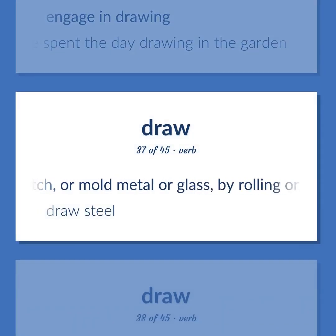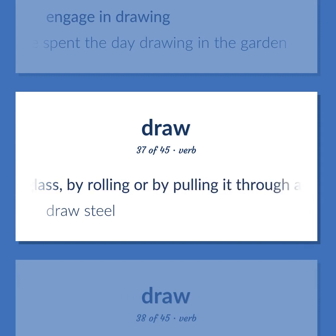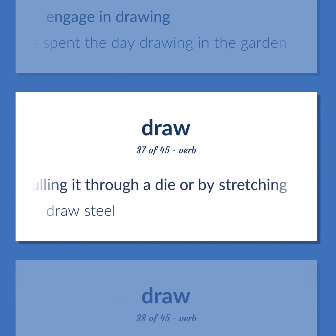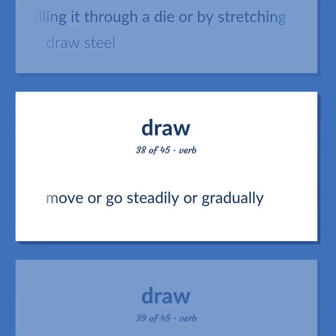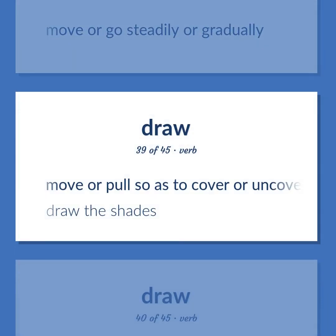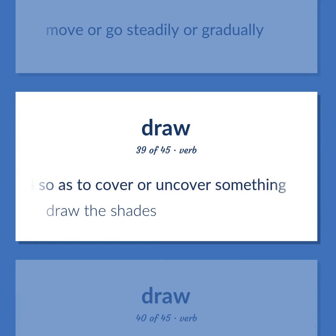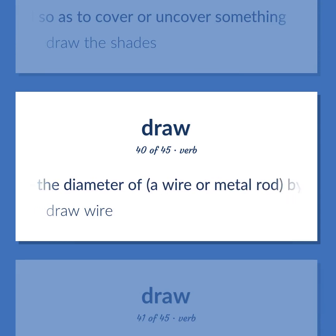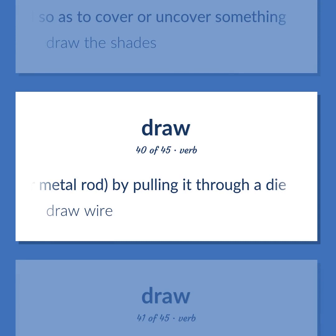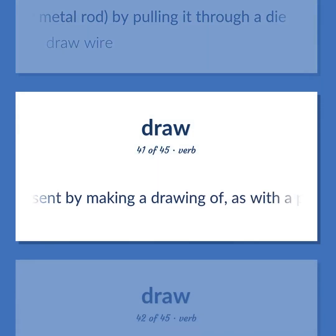Draw: to move or go steadily or gradually. Also, to move or pull so as to cover or uncover something — 'Draw the shades.' Also, to reduce the diameter of a wire or metal rod by pulling it through a die — 'Draw wire.' Also, to represent by making a drawing of, as with a pencil, chalk, etc., on a surface. Also, to require a specified depth for floating — 'This boat draws 70 inches.'